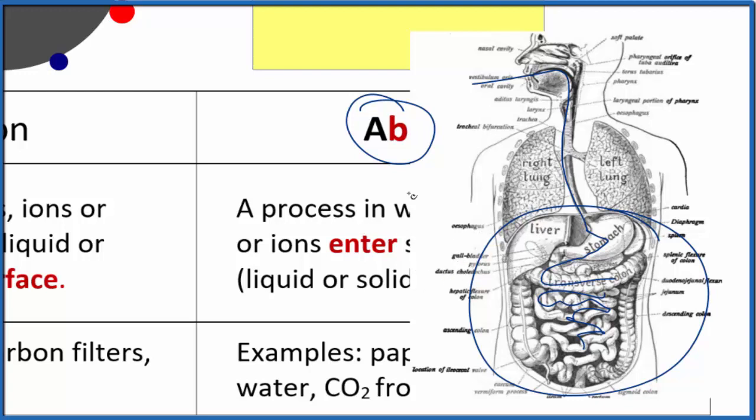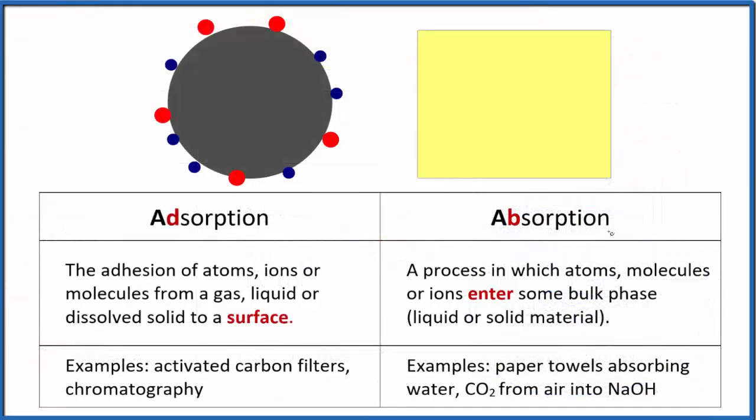The key here is when we talk about absorption, we're talking about ions, atoms, or molecules entering into the substance. So we can think about examples of absorption, pretty common everyday things like paper towels absorbing water, or we can even absorb gases like carbon dioxide from air into something like a solution of sodium hydroxide.